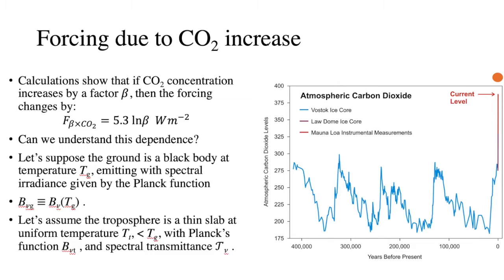Beyond internal feedbacks, there are external forcing terms, specifically the forcing due to increased CO2 concentrations. This has been shown to be proportional to the logarithm of the increase: if we increase CO2 by a factor β, the forcing change is proportional to log(β). So the dependence is logarithmic, not linear. For reference, this slide shows CO2 concentration over the last 400,000 years — it barely exceeded 300 ppm historically, and we are now far beyond that.